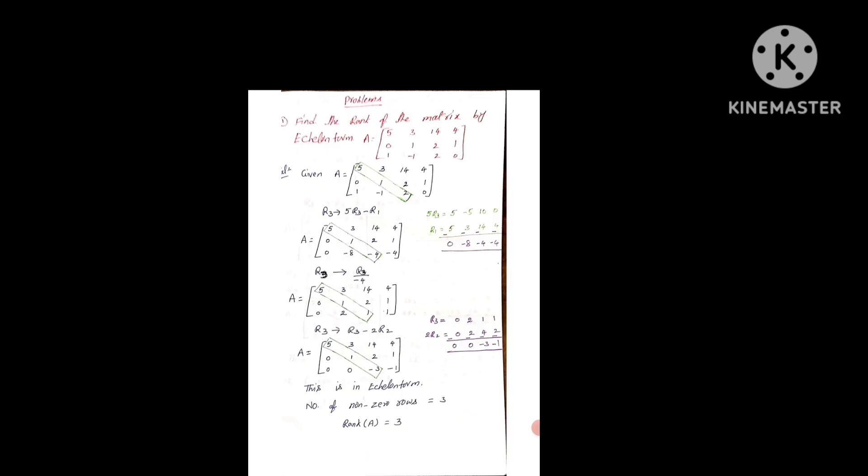Let us go to another problem. Find the rank of the matrix by Echelon Form. Given A — first we draw the principal diagonal elements: 2, 3, 7, 6 are the principal diagonal elements. Below elements we have to make zeros. R2 already has 0, no need to change. We apply R3 minus R1 and R4 minus R1. We get this matrix after these operations.